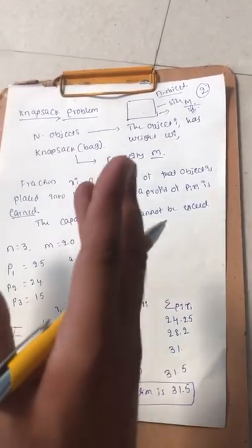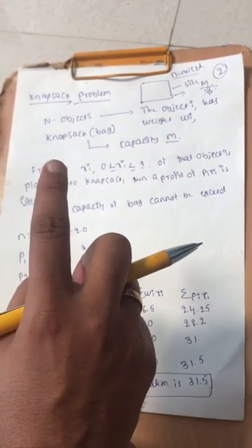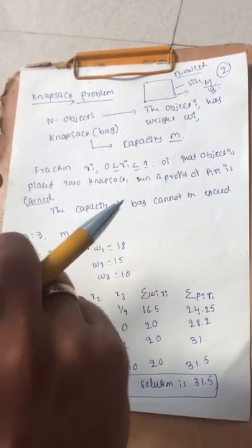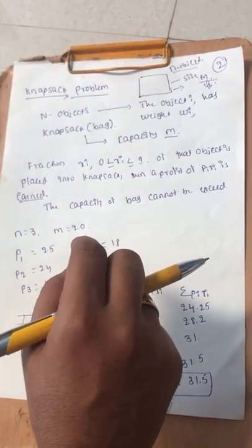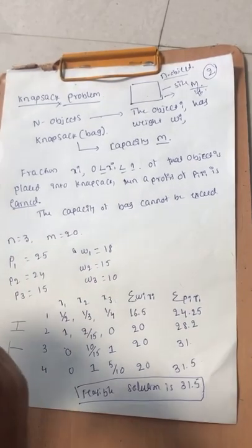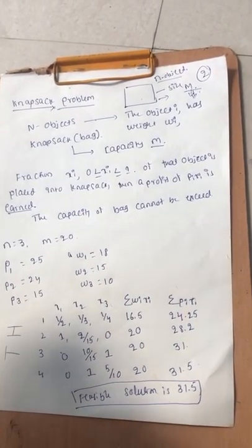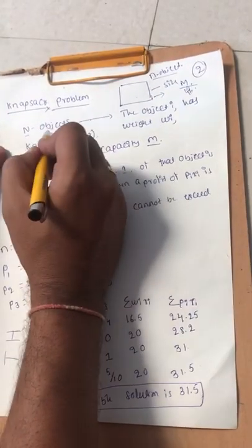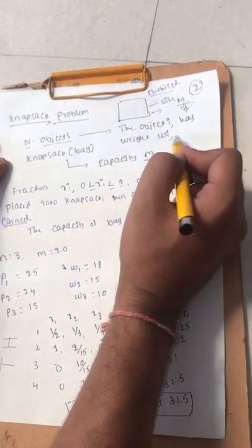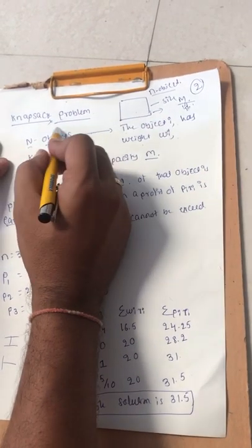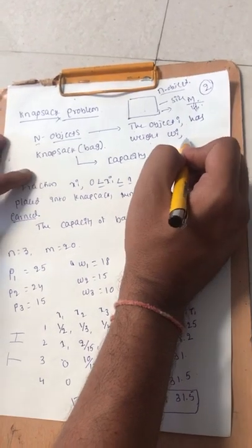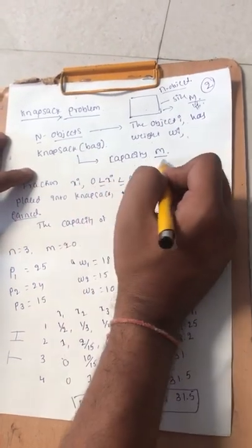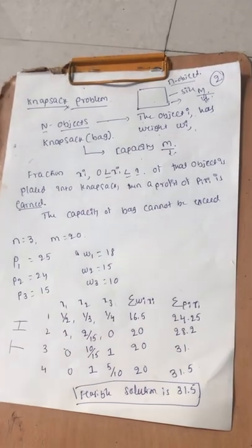We have one bag with capacity m and we need to put n number of objects into the bag. The bag capacity should not exceed m, and we need to completely fill the bag using the greedy method. Each object i has a weight w_i, and we have n number of objects each with their respective weight w_i. The capacity of the bag is m.